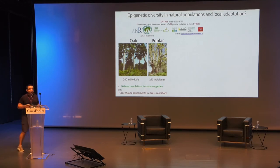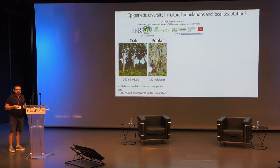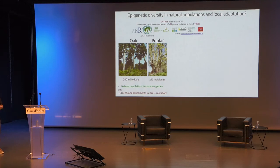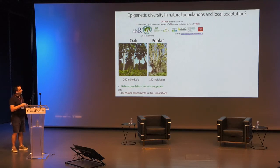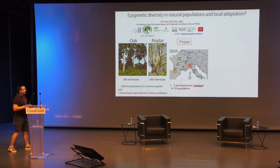We have now interest in DNA methylation variation to better understand the expression of some genes and the profile of transposable elements and how they can induce somatic mutation in trees in drought conditions. We are back to the field and back to natural populations to evaluate epigenetic diversity. EPITREE is a collaborative project with many partners on two species, oak and poplar. The idea is to analyze 240 individuals of each species in natural populations planted in common garden or used for greenhouse experiments.